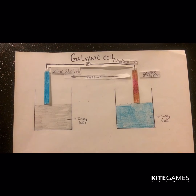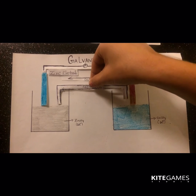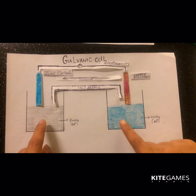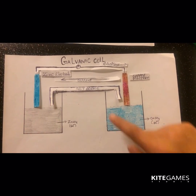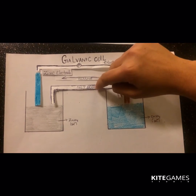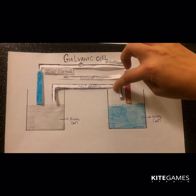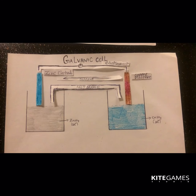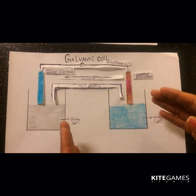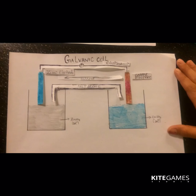There is also a very important component present in the galvanic cell — a U-shaped component present between the two beakers called a salt bridge. This salt bridge plays a very important role in the functioning of the galvanic cell. I will discuss the function of the salt bridge and the full working of the galvanic cell in the next video. This covers the basic construction of the galvanic cell. See you in the next video, bye.